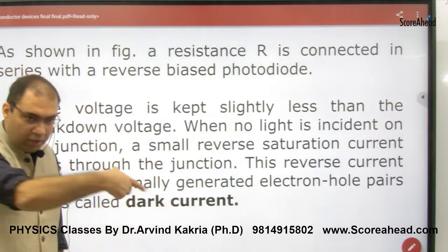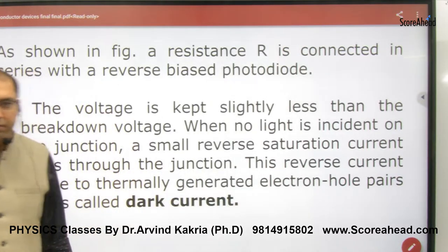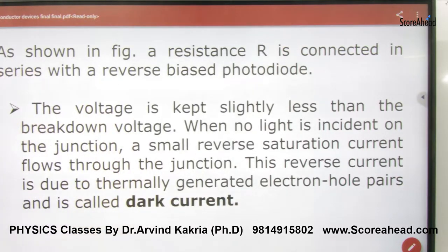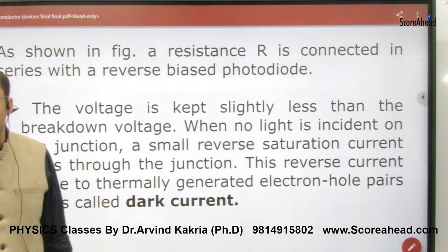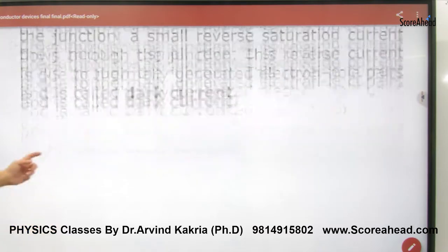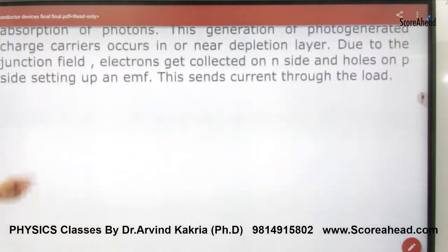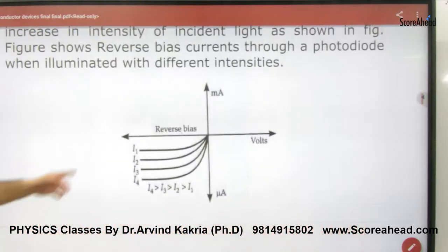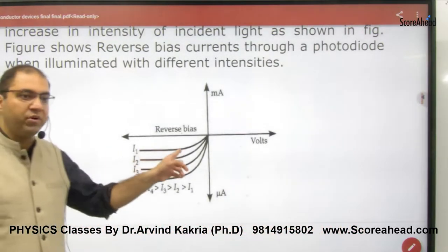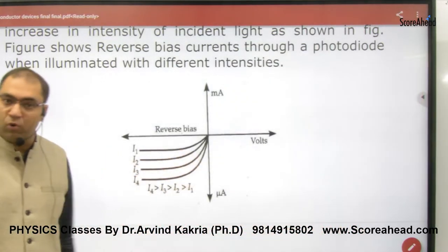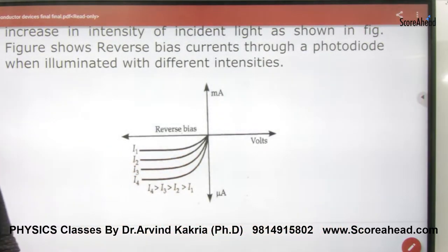The reverse current in a photodiode is called dark current. This is an important exam question: What do we call the reverse current in a photodiode? It is called dark current. The other important point is the graph — the photodiode characteristics graph is very important.